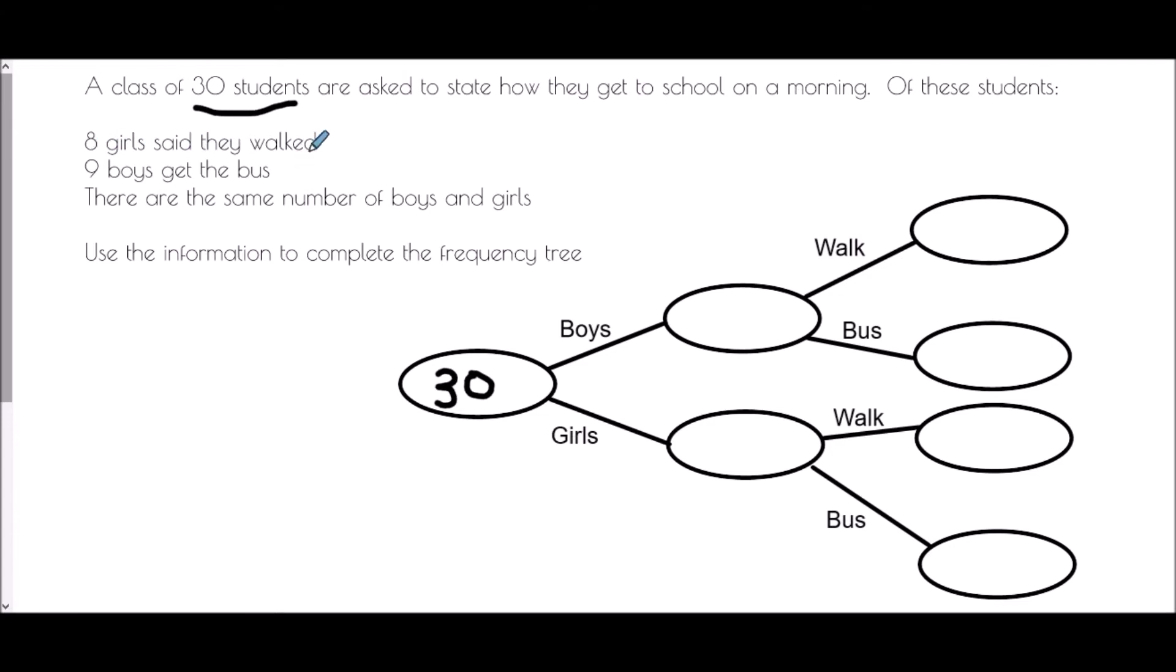Eight girls said they walked. And therefore, we need to be in the girls section and the walk section. There are eight girls who walk. Therefore, this bubble will be eight. And we can tick that off. It says nine boys get the bus. Okay, so we are in the boys section getting the bus. And that is nine. We can give that a tick.